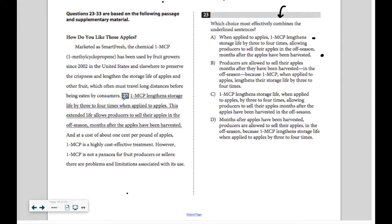Now we're looking at number 23. 1MCP lengthens storage life by three to four times when applied to apples. This extended life allows producers to sell their apples in the off season, months after the apples have been harvested.